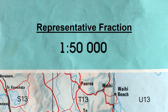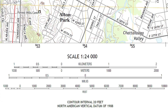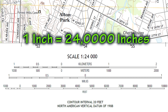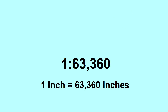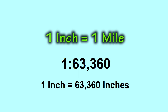Other maps use a representative fraction. Topographic maps produced by the United States Geological Survey use 1 to 24,000. This means that one inch on the map equals 24,000 inches in the real world. Another common representative fraction used is 1 to 63,360 — that is, one inch to one mile.